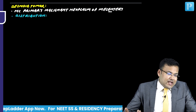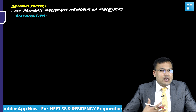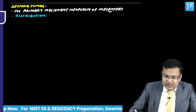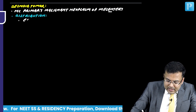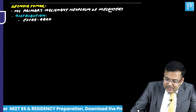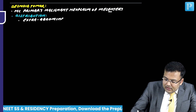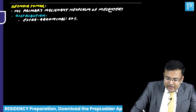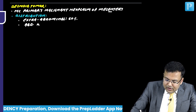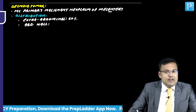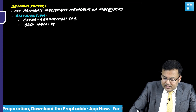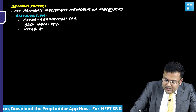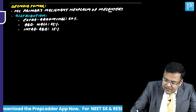The distribution of desmoid tumours is as follows: it is extra-abdominal in 60% of cases, arising from the abdominal wall in 25% of cases, and intra-abdominal in 15% of cases. It is most commonly extra-abdominal. You have to remember these percentages.